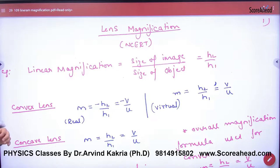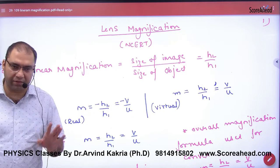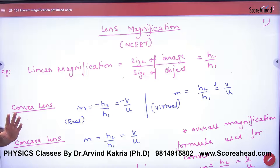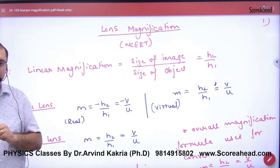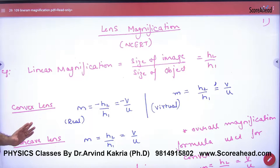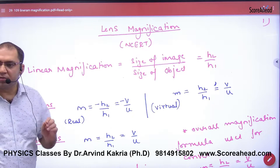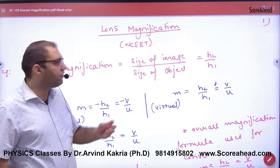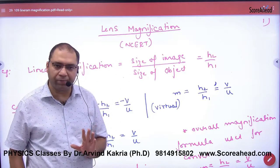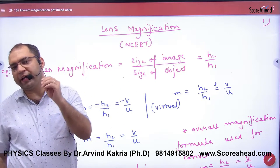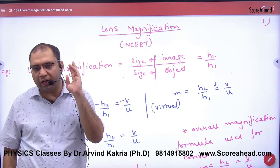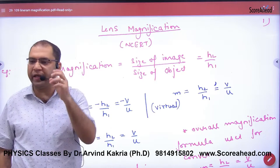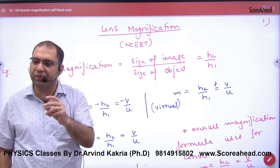Linear Magnification of a lens — this applies to either a convex or concave lens. Linear magnification is the size of the image divided by the size of the object. The size of image is taken as A'B', and the formula is H2 by H1.